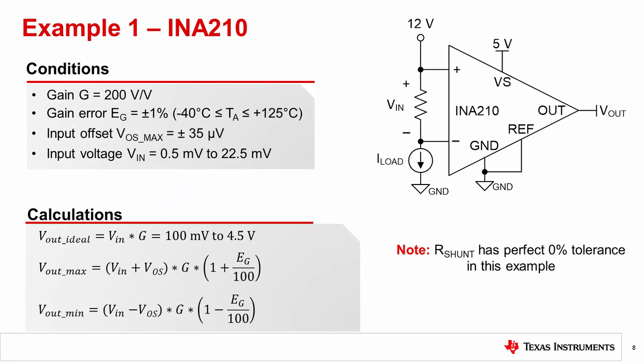Let's now consider an example using the INA210, which is set to a gain of 200 volts per volt with a plus or minus 1% maximum gain error. The available power supply is a 5 volt rail. The input voltage range of consideration, which is set by the load current and shunt resistor, will range from 500 microvolts to 22.5 millivolts. To calculate Vout ideal, we simply multiply the input voltage by the gain. This results in a range of 100 millivolts to 4.5 volts, which is well within the normal operating output region.